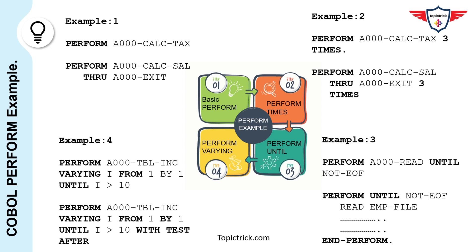Example four is PERFORM with the VARYING phrase. Here I have a PERFORM statement referencing a paragraph named A000-TBL-INC, VARYING I FROM 1 BY 1 UNTIL I IS GREATER THAN 10. It will keep executing the logic in that paragraph, incrementing I by one each time, until I exceeds 10. You can also use WITH TEST AFTER or WITH TEST BEFORE parameters to check the condition either after or before executing the logic.